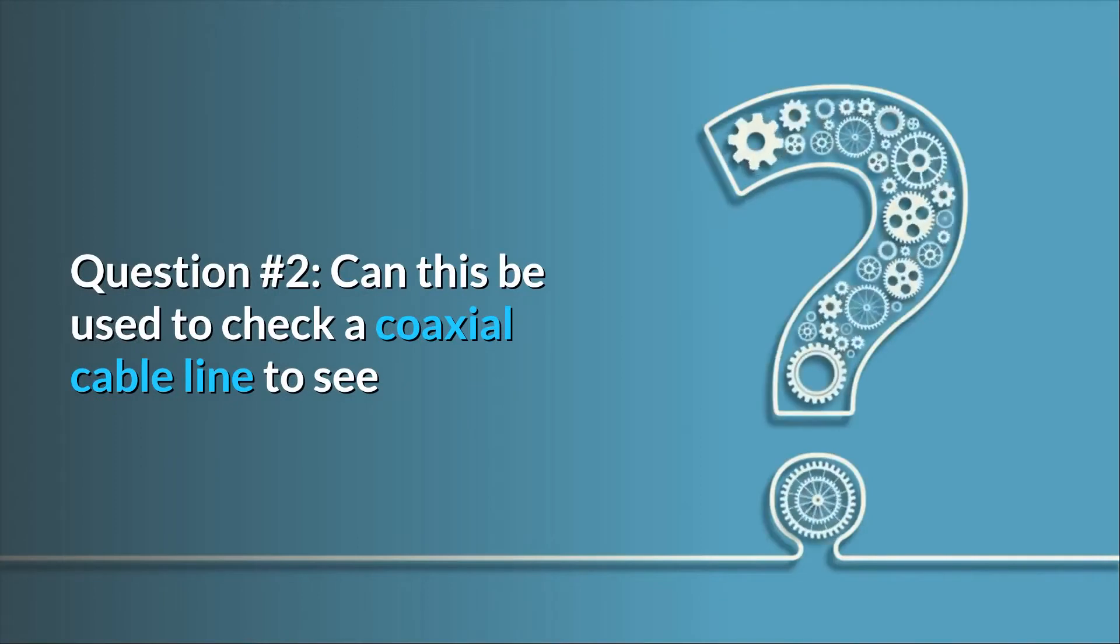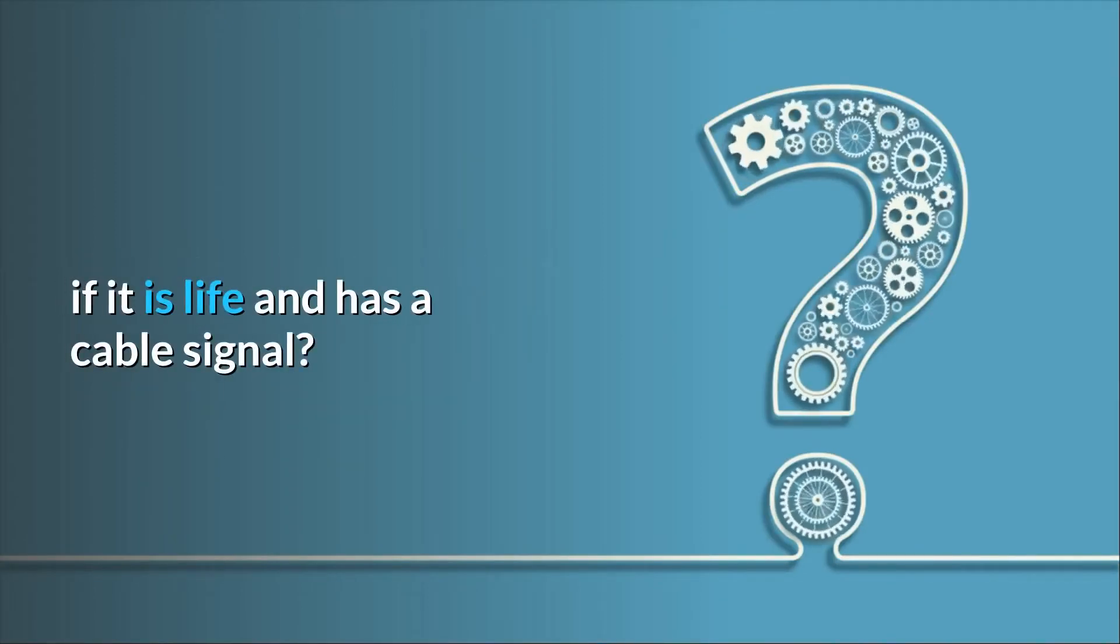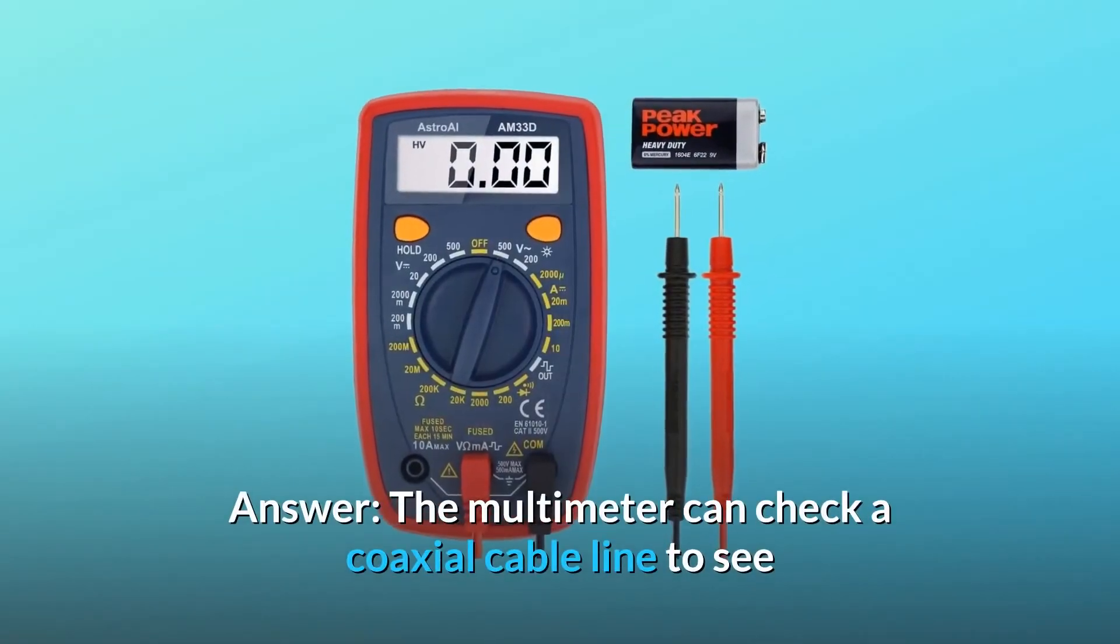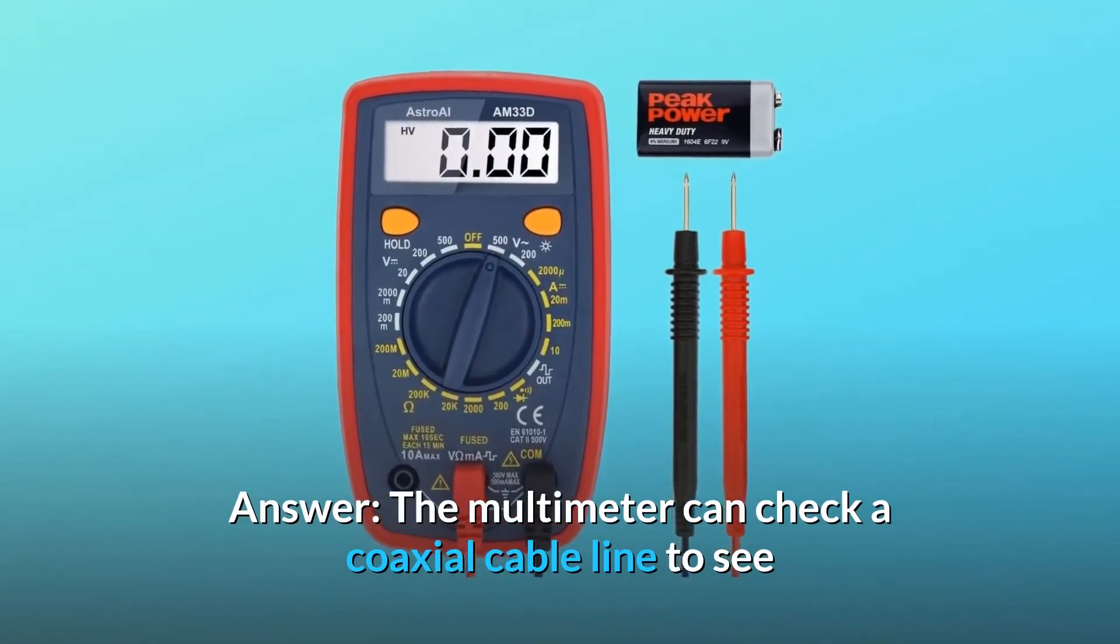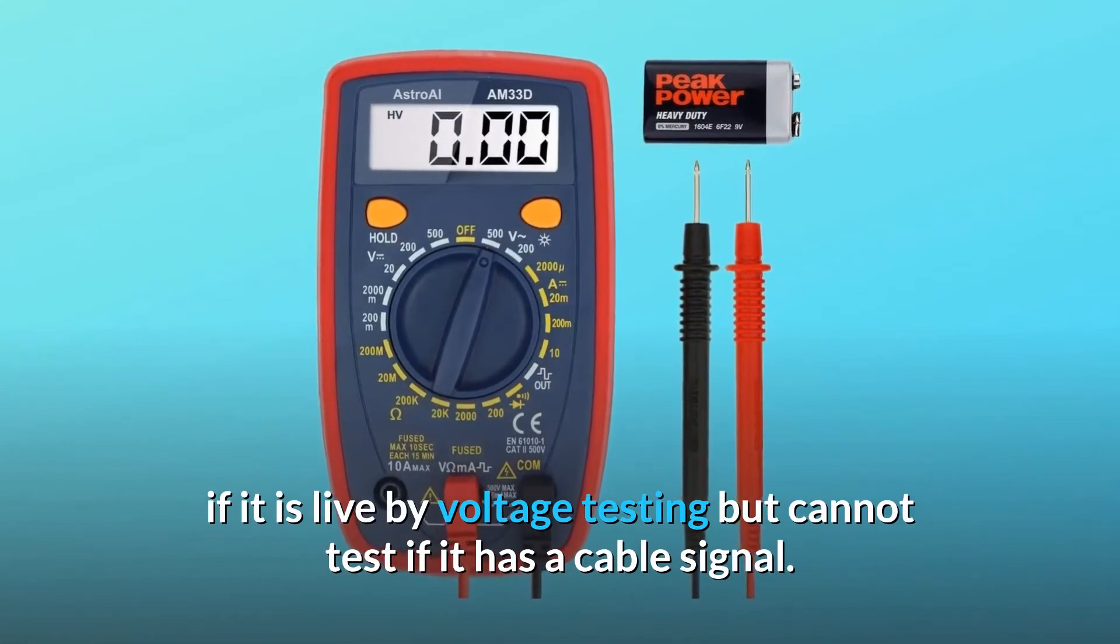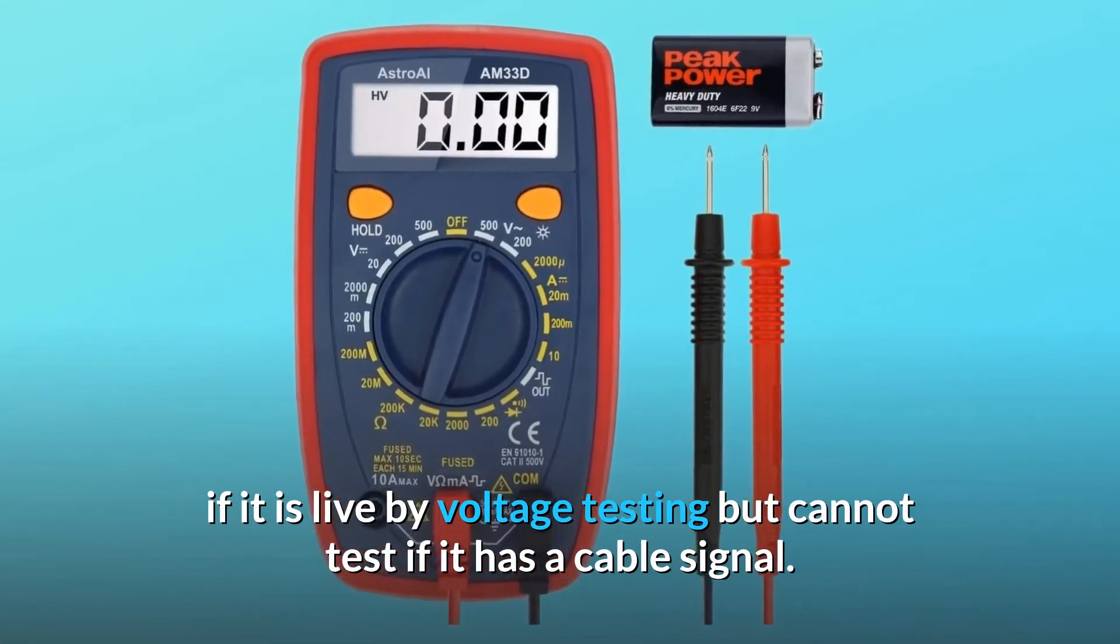Question number 2: Can this be used to check a coaxial cable line to see if it is live and has a cable signal? Answer: The multimeter can check a coaxial cable line to see if it is live by voltage testing but cannot test if it has a cable signal.